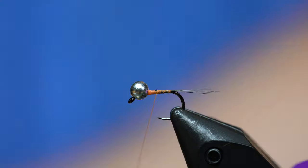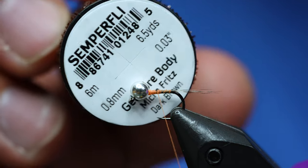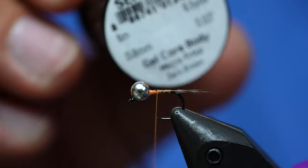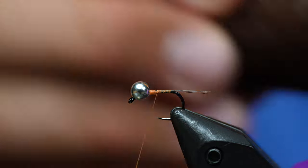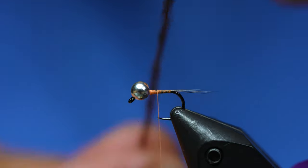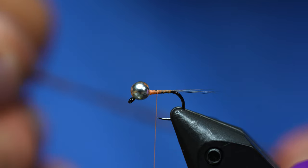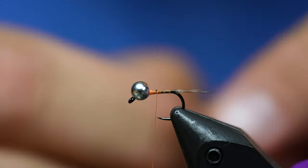Now the highlight of this fly is the Semperfly Gel Core Body Micro Fritz. I'm using dark brown here. This is really cool stuff because it's super durable and fairly thin. So you can take this stuff and literally you can't break it because it's spun on a gel core.